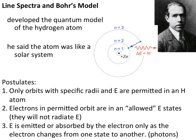The second postulate Bohr proposed is that electrons in permitted orbits are only allowed in these specific energy states, meaning they will remain where they are and don't radiate any energy — they stay in their pathway. The third postulate is that energy is going to be emitted or absorbed by electrons when they transition between different orbits. These are the three postulates that Bohr proposed.